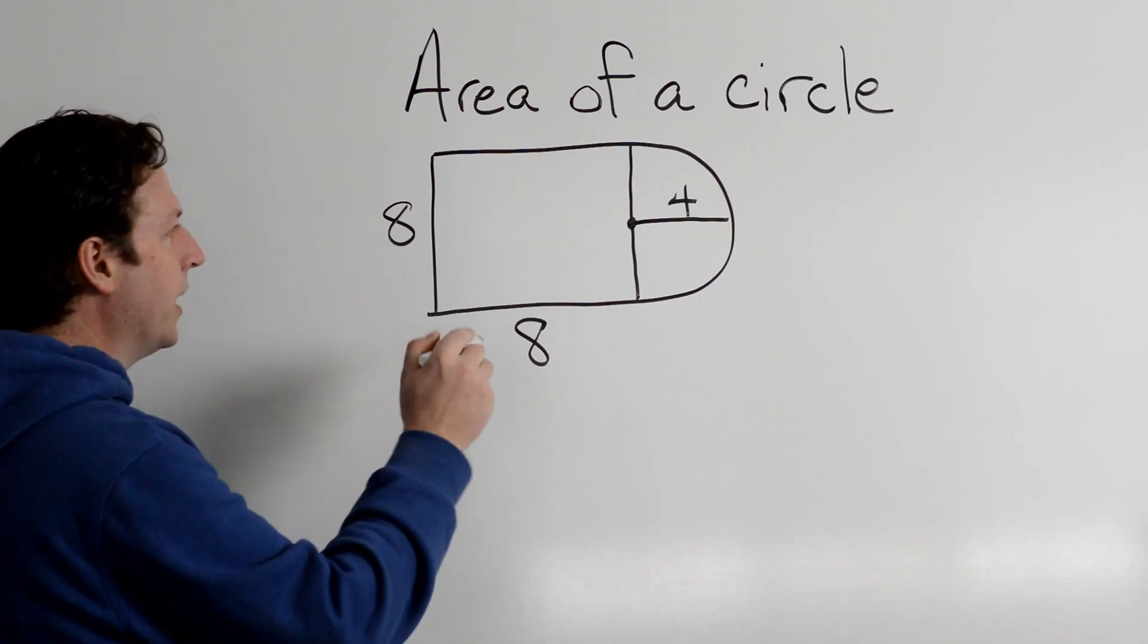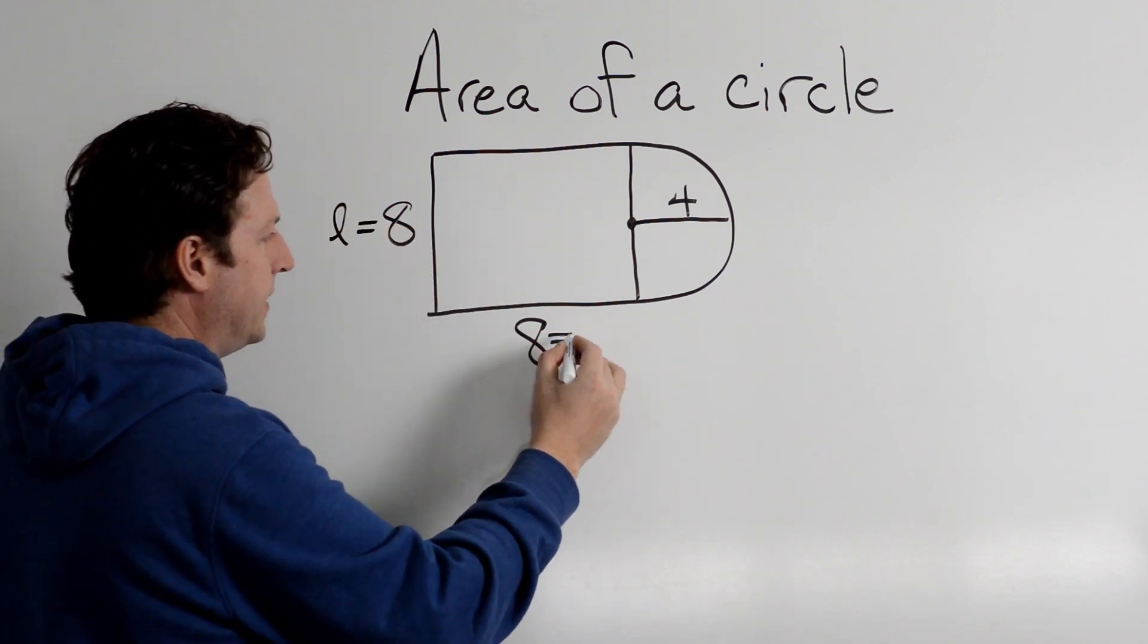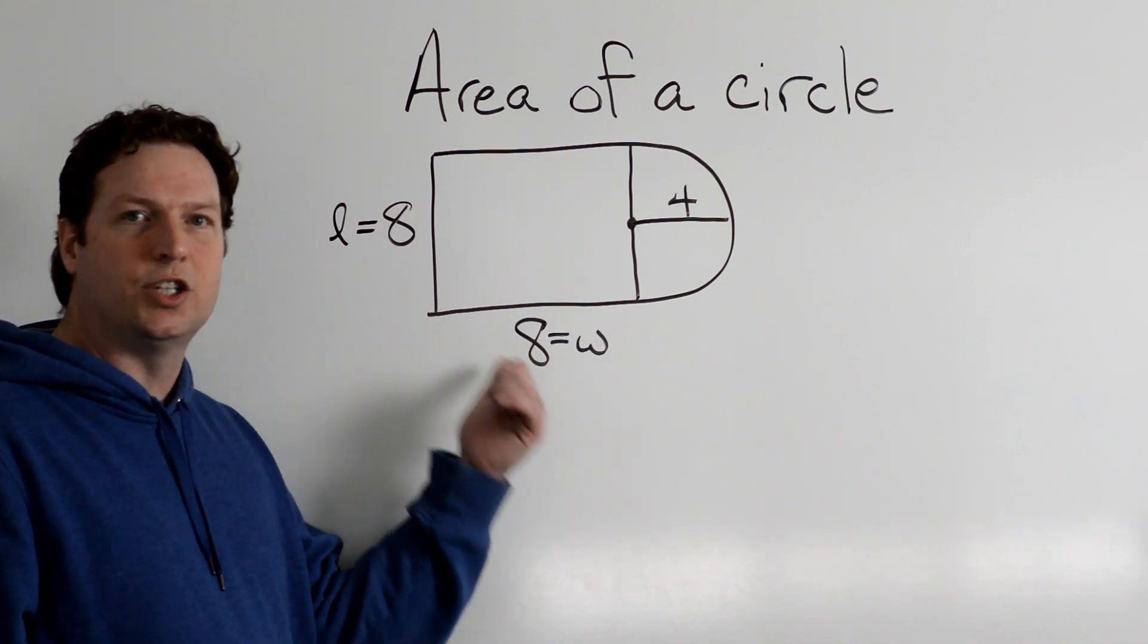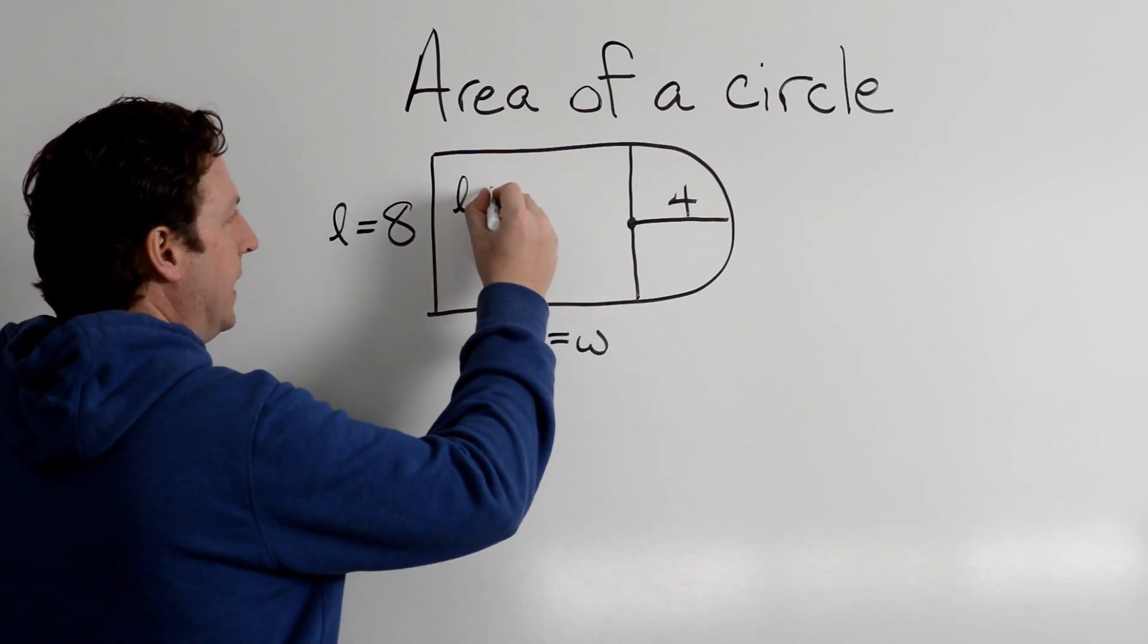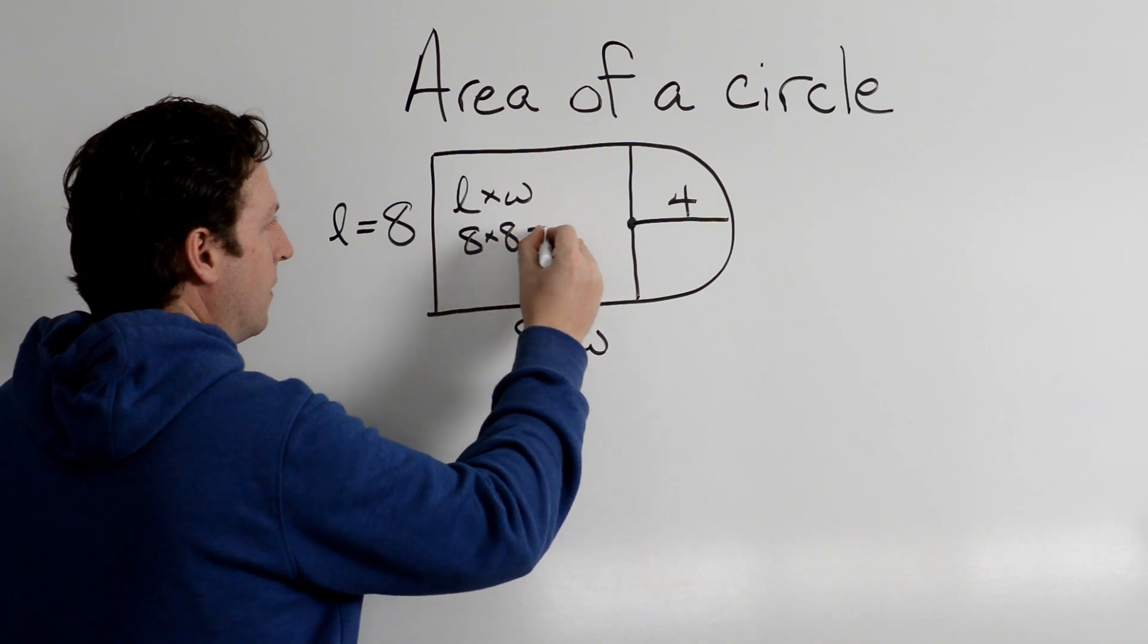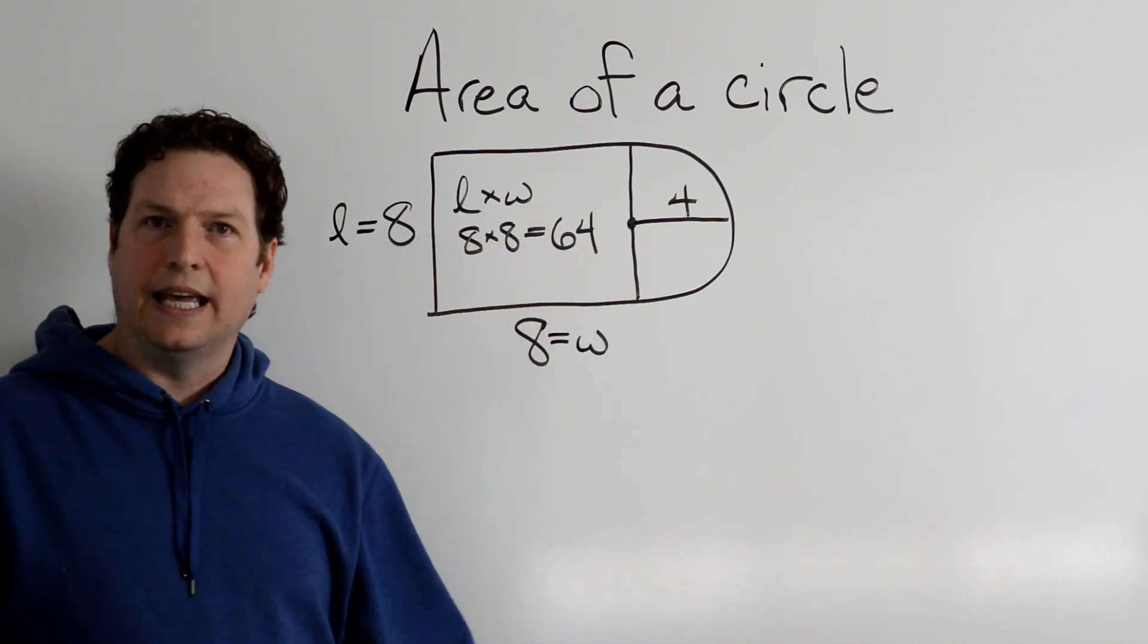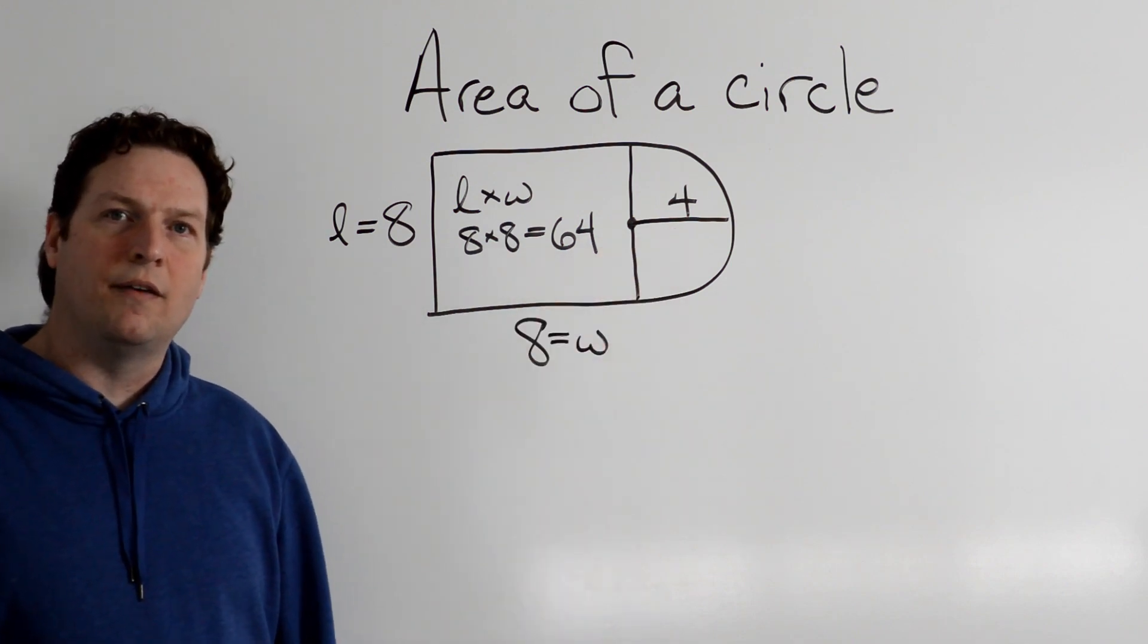Okay, let's look. If this was a square, I would call this the length and this the width, and we know to find the area of a square it's just length times width. So we know that the area of this is 64.